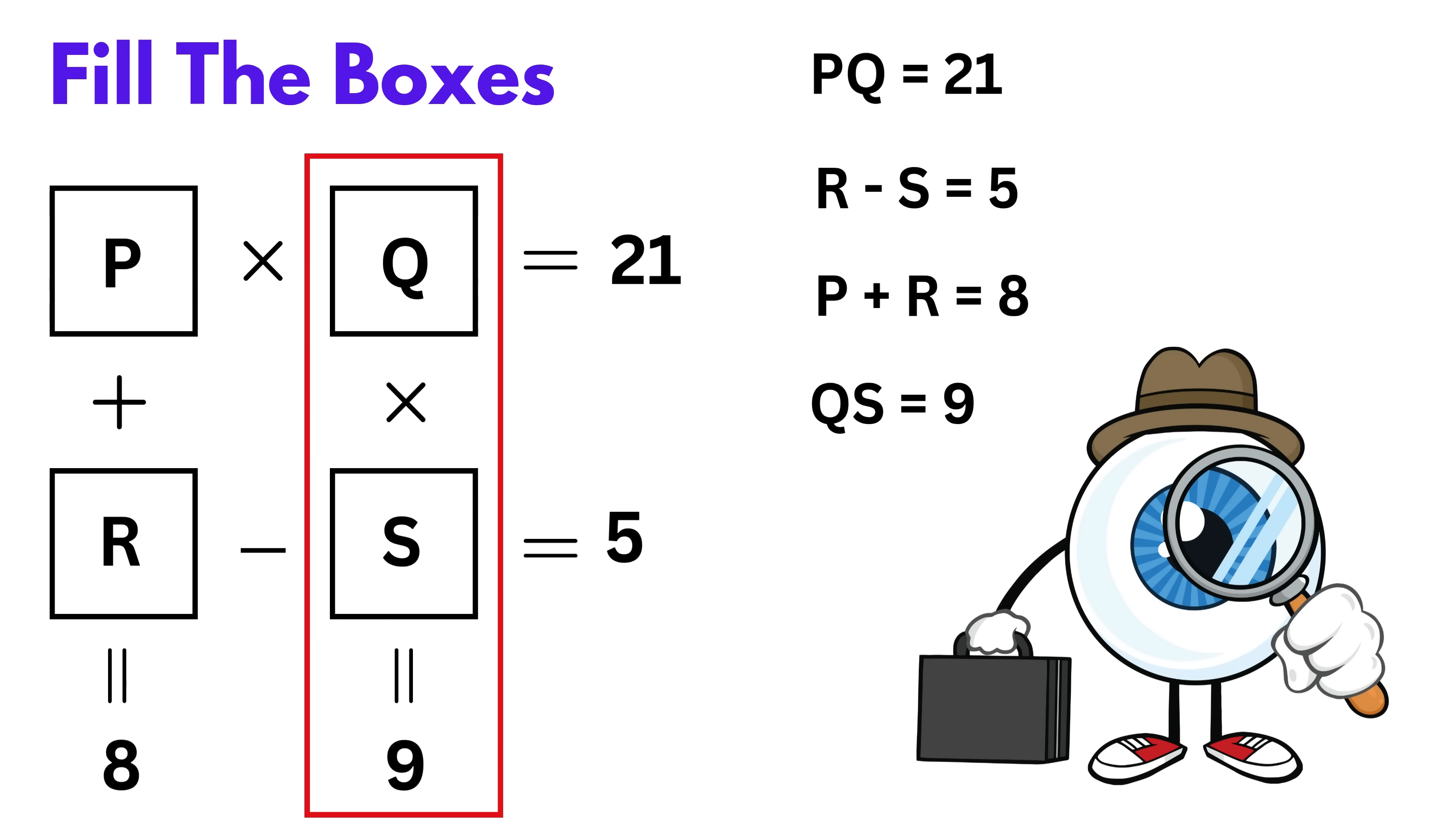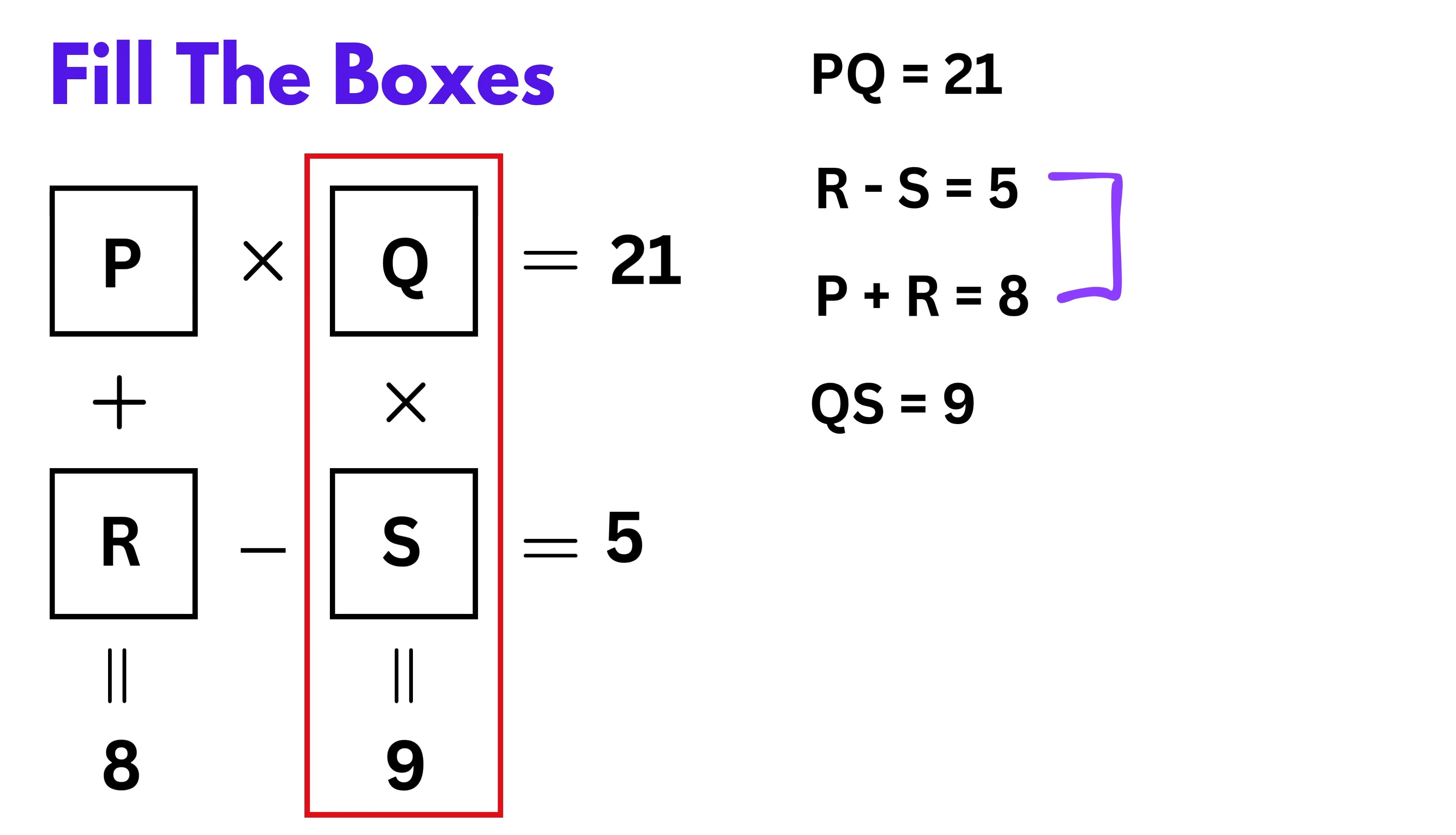Let us see how we can solve them step by step. Let's begin with the second and third equations. From R minus S equals 5 and P plus R equals 8. If we subtract the second equation from the third, we get P plus R minus R plus S, which simplifies to P plus S. And on the right side, 8 minus 5 gives us 3. So now we have P plus S equals 3. Let's keep that aside.